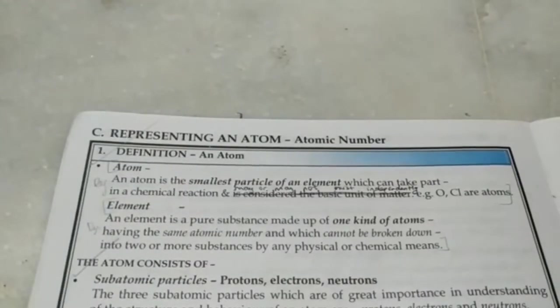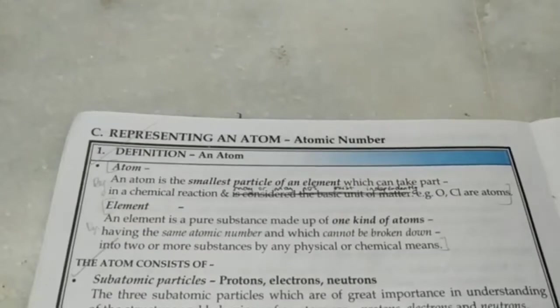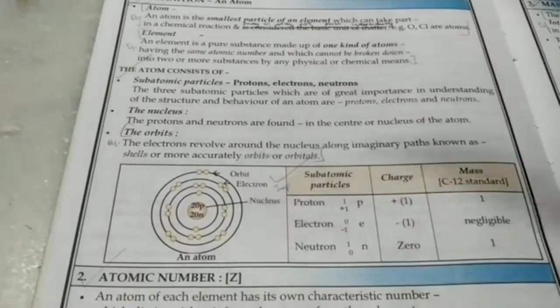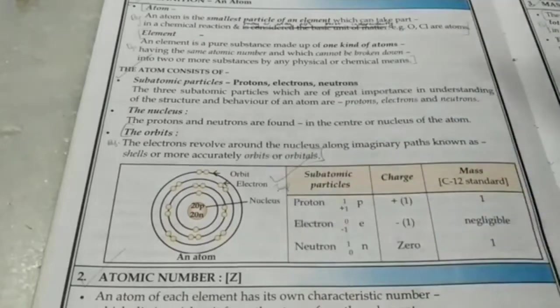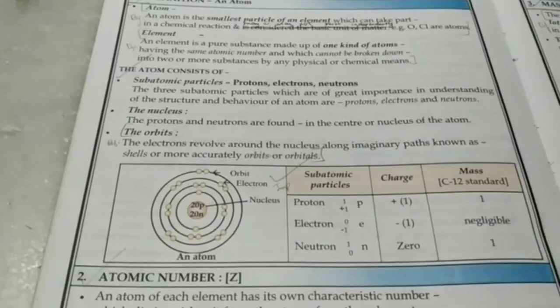There are 118 elements discovered so far. At school level, let's assume that an atom looks like this. This is called the planetary model, but this is not the reality. The concept is a bit more complicated, but you'll study that in college.